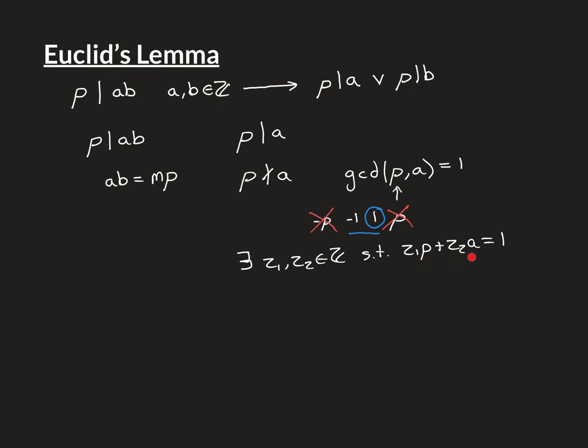I am going to take this equation and multiply both sides by B. Now, you might not immediately see why I'm doing this, but this is going to be how I'm going to show that B is divisible by P. Remember, to show B is divisible by P, I need to show that B can be written as some integer multiple times P.